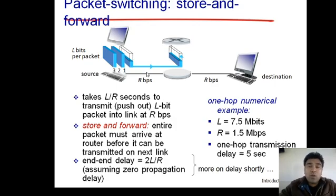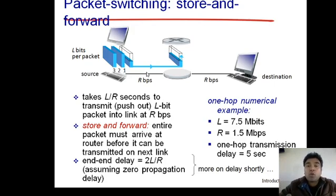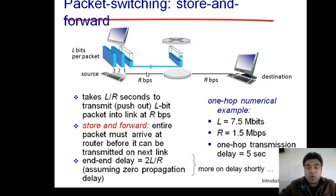To recap: the transmission delay formula is L/R — the time required by a router or node to push all the bits of a packet onto the link. Thanks for today. In the next lecture we will discuss two more delays along with an understanding of circuit switching. Thank you very much.